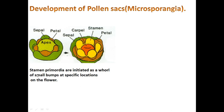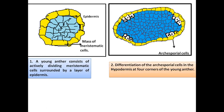Now coming to the development of the pollen sacs: stamen primordia are initiated as a wall of small bumps at specific locations of the anther when the flower primordia emerge on a vegetative plant. In the first stage, if we give a transverse cut to this young anther, we get a structure with a single layer of epidermis and inside it a mass of meristematic cells — cells which have the power of division.